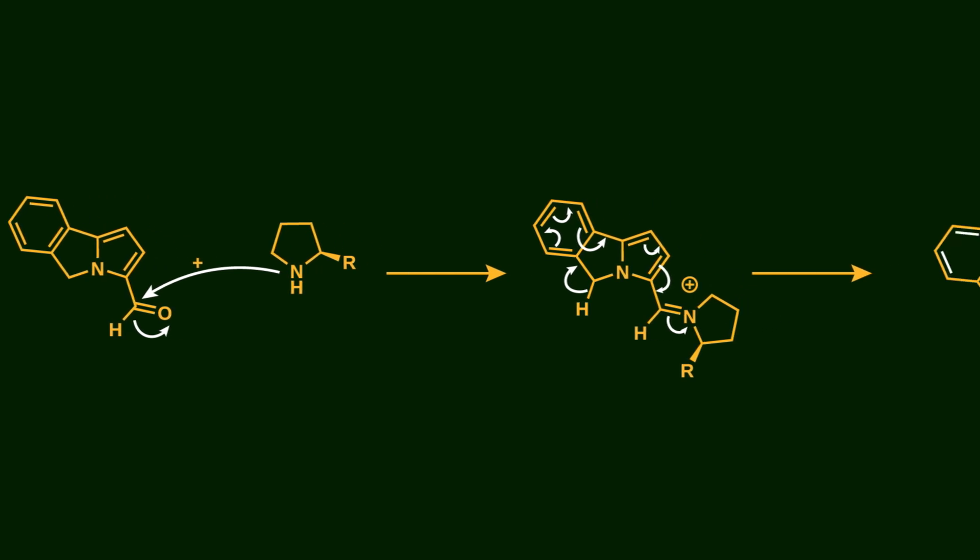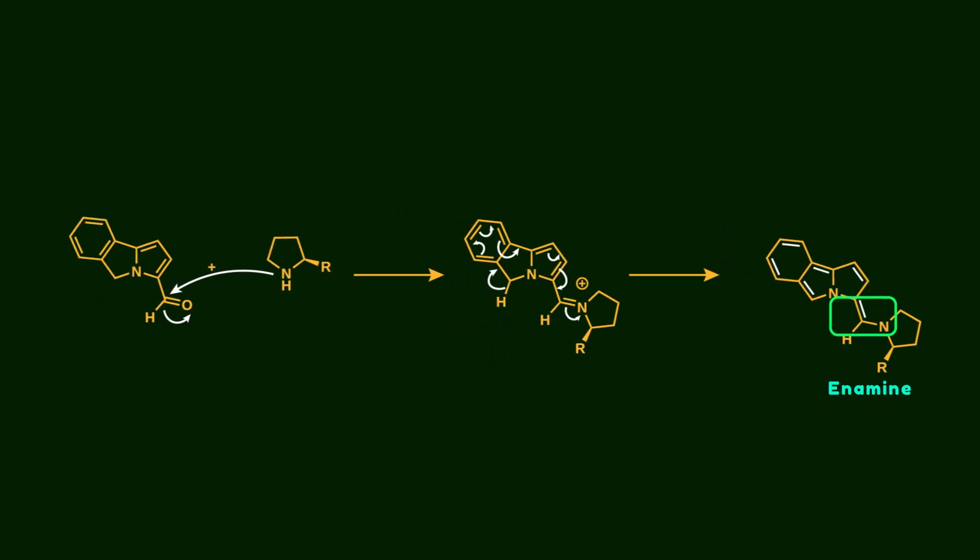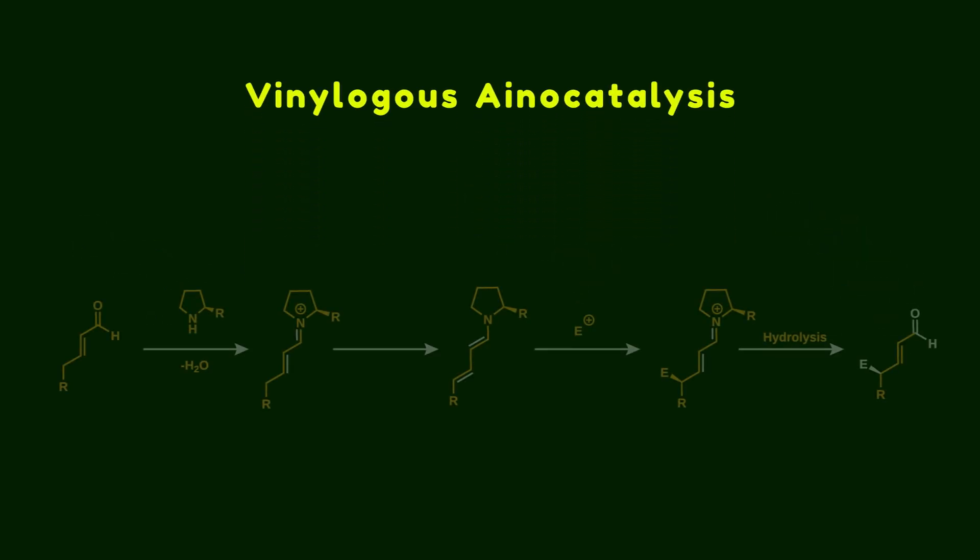After that, it is transformed into an enamine by shifting the positions of the pi bonds. Now, our 12π component is activated for the cycloaddition reaction. This strategy is called vinylogous aminocatalysis, which allows the generation of reactive polyenes by deprotonation of enolizable aldehydes at remote positions.